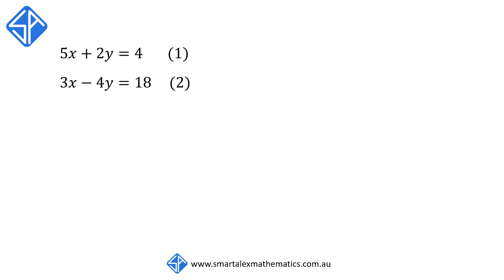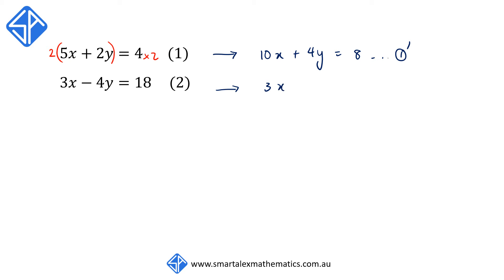Our next example: we have 5x plus 2y is equal to 4 and 3x minus 4y is equal to 18. In its present form, we don't have a common x term or a common y term. But what we can do is multiply the first equation — both the left and the right hand side — by 2, so that this becomes 10x plus 4y is equal to 8. We'll call this equation 1 dash, while equation 2 remains 3x minus 4y is equal to 18.